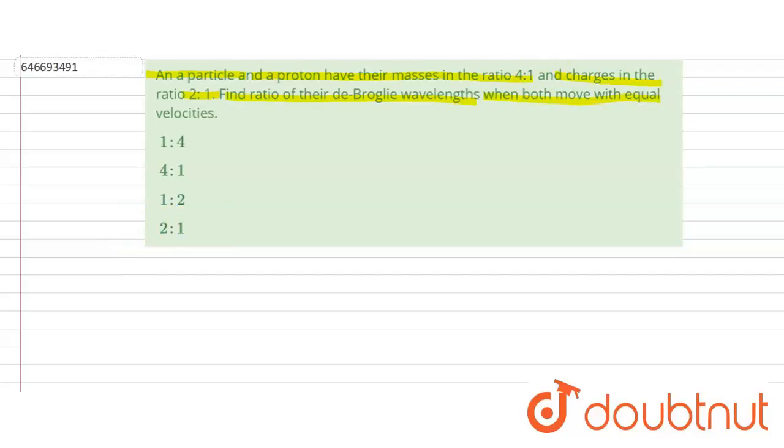We know that from the de Broglie wavelength, lambda is equal to h divided by p. And we can write h divided by p as h divided by mass times velocity. But here it is given that both move with equal velocity, that means constant velocity.